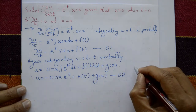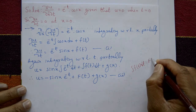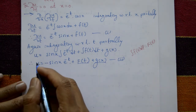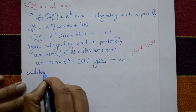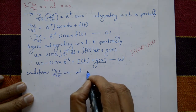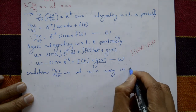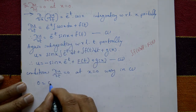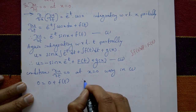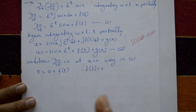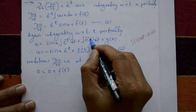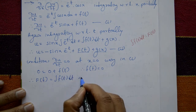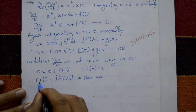Now find f(t) and g(x) using the conditions. First condition: ∂u/∂t = 0 at x = 0. Substituting into equation 1: 0 = e^(-t)·sin(0) + f(t) = 0 + f(t). Therefore f(t) = 0. Since F(t) = ∫f(t)dt and f(t) = 0, we get F(t) = 0.